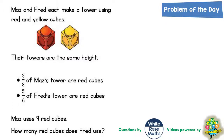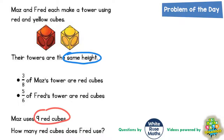Welcome problem solving fans to another problem of the day. This one is all about building a tower using red and yellow cubes. Maz and Fred each make a tower using red and yellow cubes. Their towers are the same height. 3 eighths of Maz's tower are red cubes, 5 sixths of Fred's tower are red cubes. Maz uses 9 red cubes. How many red cubes does Fred use?